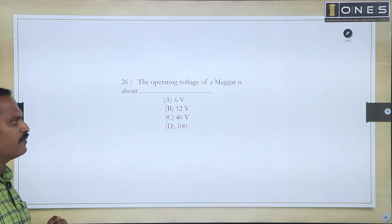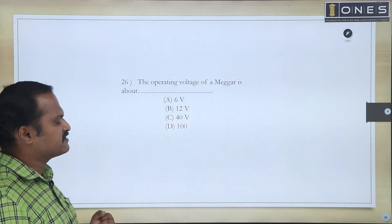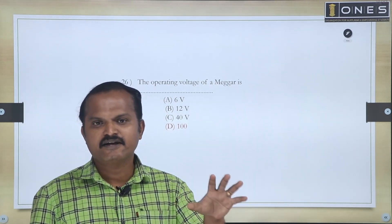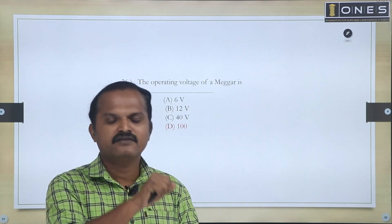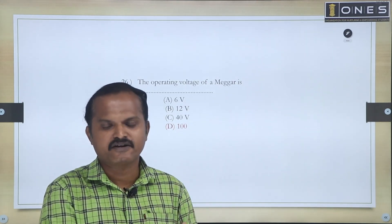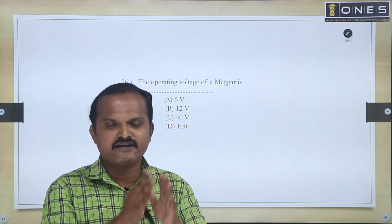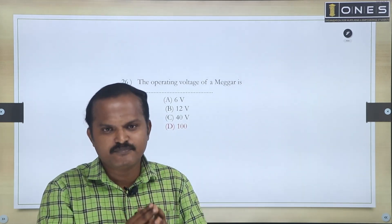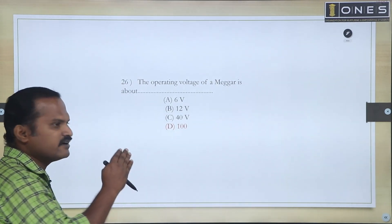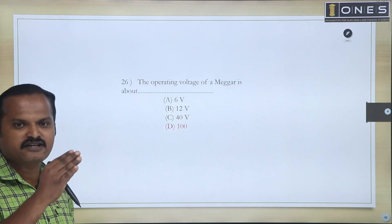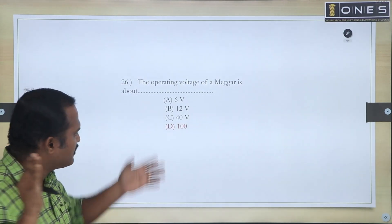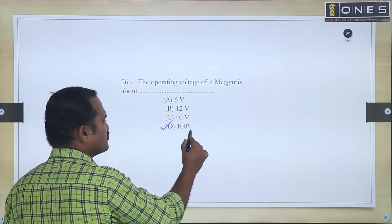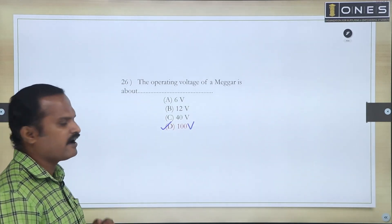Next, the operating voltage of the Megger — we discussed this. The Megger has one hand-driven type and one battery-operated type, generating voltage. The operating range of the Megger: standard ranges are 100V, 500V, and 1000V. The operating voltage of the Megger — the answer will be 100 volts.